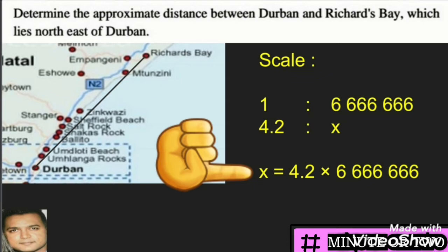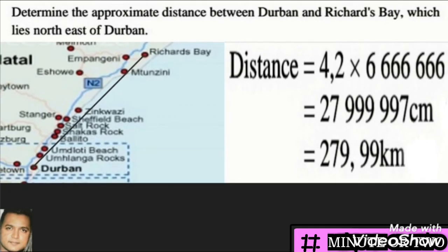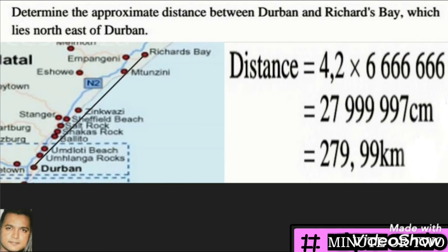Now we can cross-multiply: we take the 1 and multiply it by x, and we take the 4.2 and multiply it by 6,666,666. This gives us our answer in centimeters. Since distance on the ground is best expressed in kilometers, we divide by 100,000, arriving at approximately 279.99 kilometers.